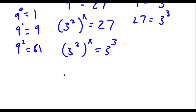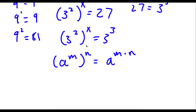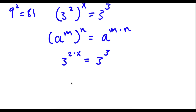Now if I have something in the form a to the power of m to the power of n, this is equal to a to the power of m times n. So 3 to the power of 2 to the power of x equals 3 to the power of 2 times x, which equals 3 to the power of 3. And 3 to the power of 2 times x is the same thing as 3 to the power of 2x, which equals 3 to the power of 3.